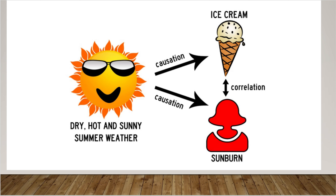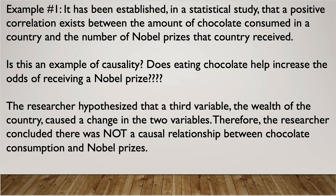There is a correlation possibly between the ice cream and the sunburn, but one doesn't cause the other. If I have a sunburn, that doesn't cause my ice cream to melt, or vice versa. So that's a good example of causation — the sunny temperature causes the ice cream to melt and causes a sunburn.